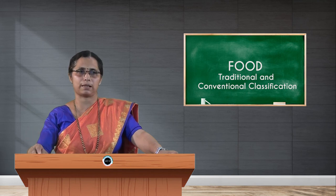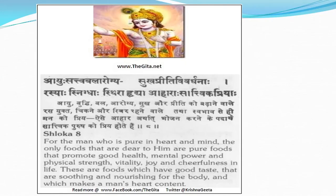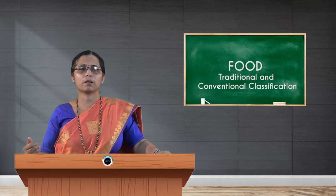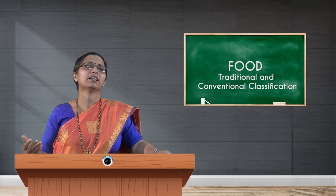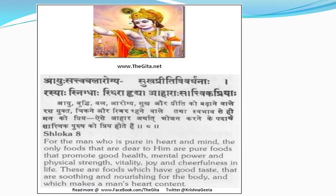In the Bhagavad Gita there is a particular sloka: 'Ayu sattva balam arogya sukha priti vivardhanah, rasyah sthirah hrdyah aharaha sattvika priyah.' These are the qualities of Sattvika Ahara. When food is taken, it should help improve Ayu (length of life), Sattva (essence of the person), Bala (strength), and Arogya (health). These physical qualities must be present in any food taken, which is why in a disease condition we help the person overcome the disease process and attain Arogya — the healthy condition.